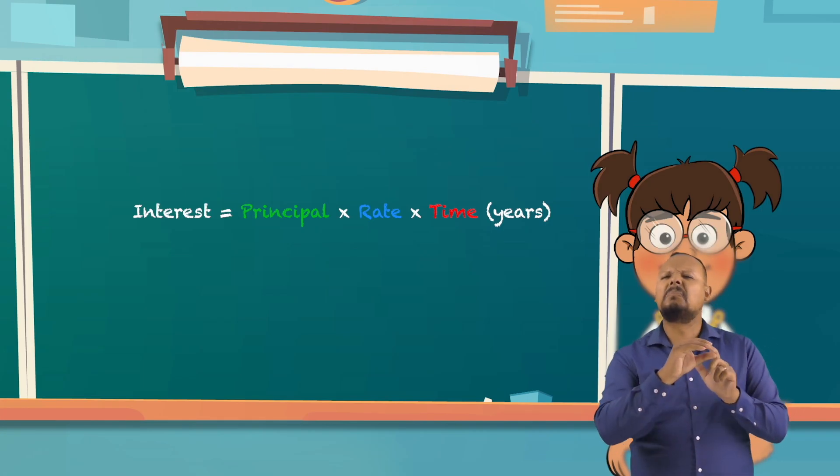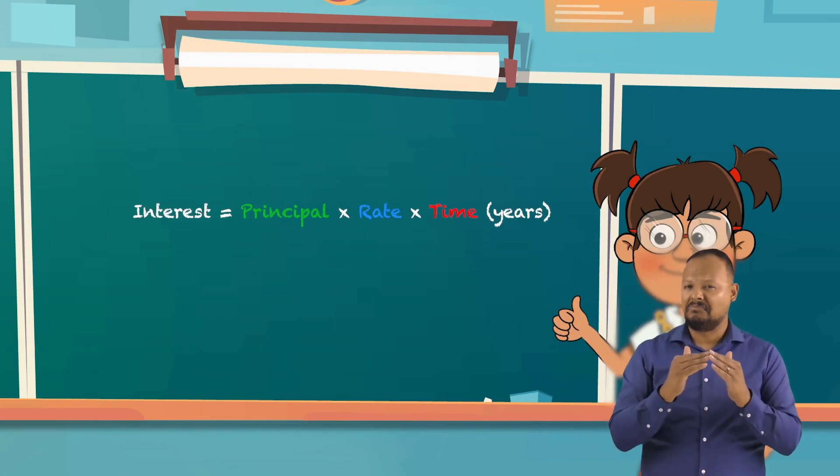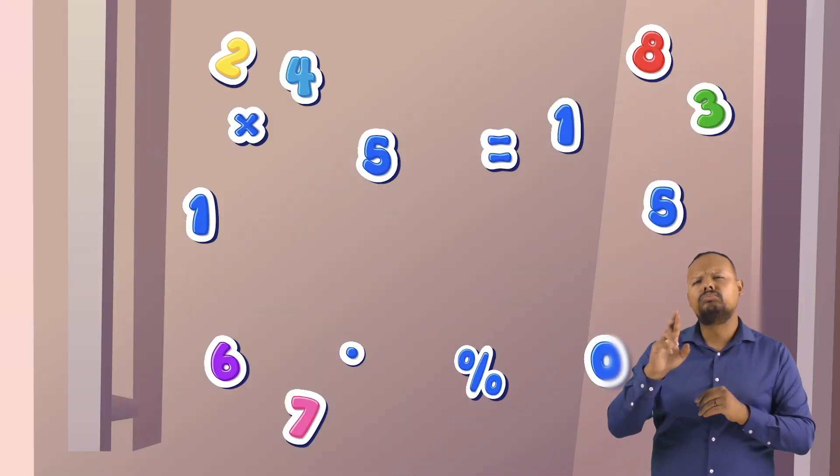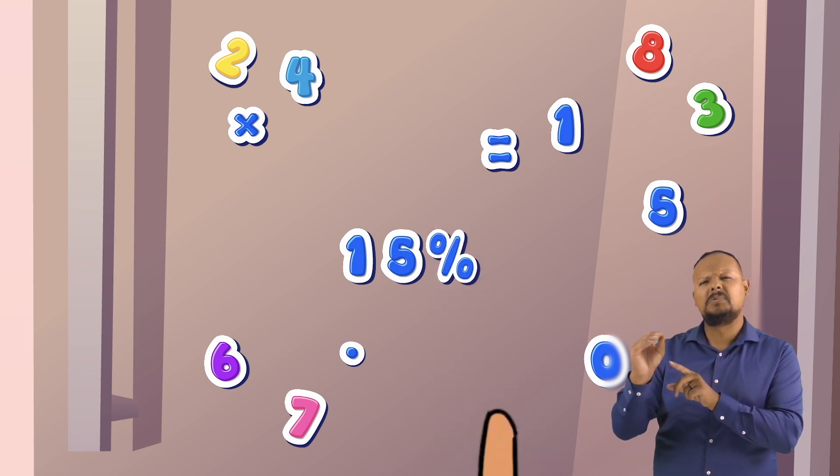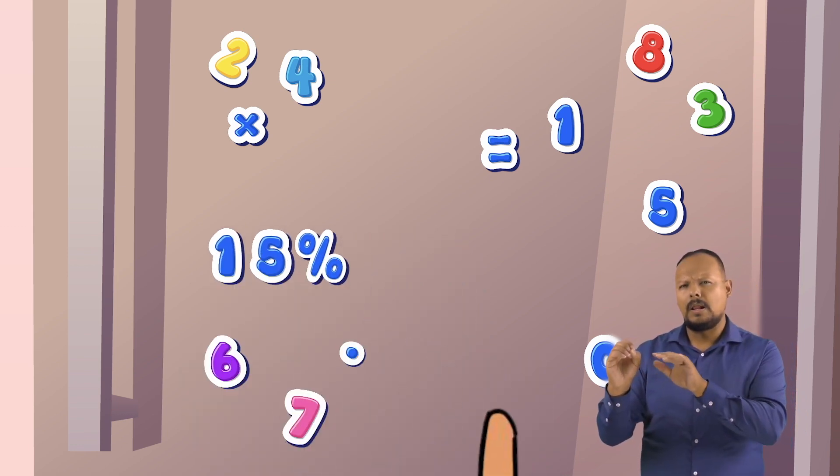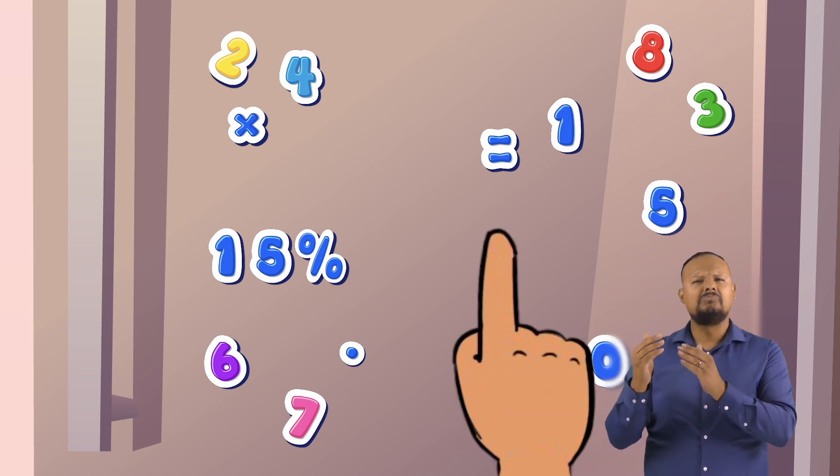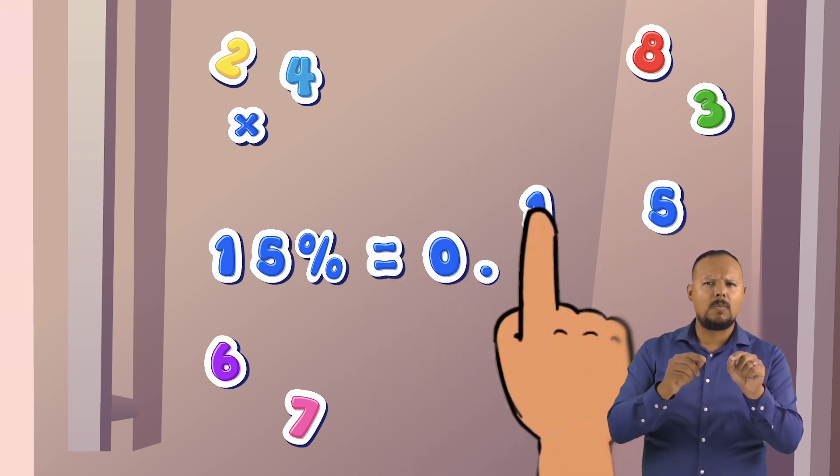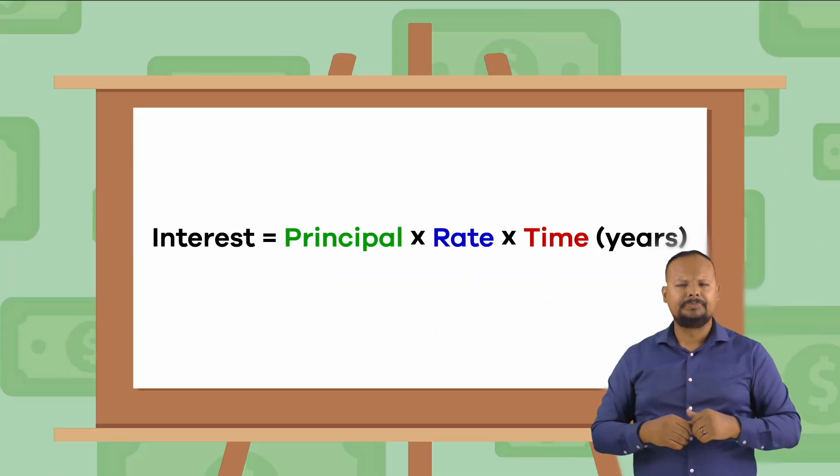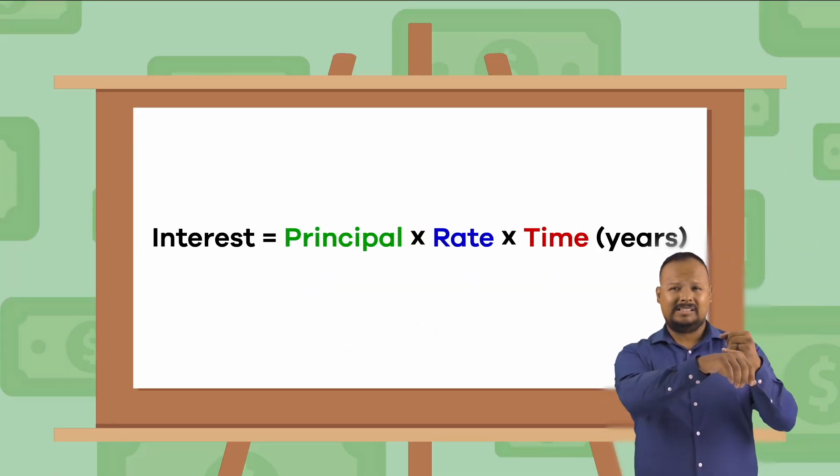Let's use our handy-dandy math equation to figure it out together. First, though, we have to convert the rate, which in this case is 15%, into decimal format. Like so. 15% equals .15. Ok, now we are ready to use the equation.